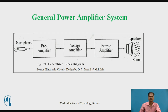Now let us see the general power amplifier system. The general power amplifier system consists of an input signal pickup transducer, a preamplifier, a voltage amplifier, a power amplifier, and output transducers. The typical example of this general power amplifier system application is a public address system or a sound amplifier system.